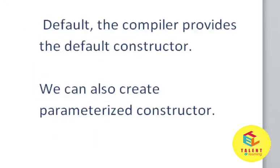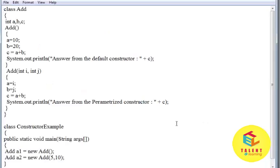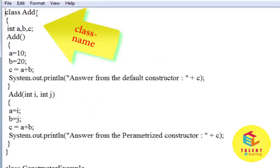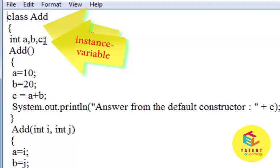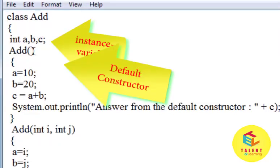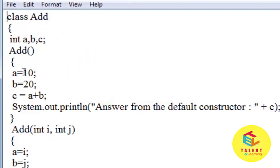Let's take a look at the example of constructor. Here the class name is Add. This is the instance variable a, b, c which is default constructor which assigns the value to the instance variable. Value 10 is assigned to variable a, 20 is assigned to variable b and result is stored in the variable c.